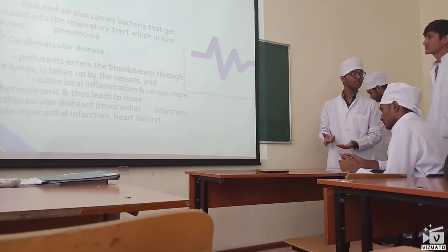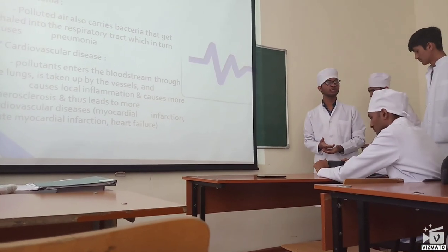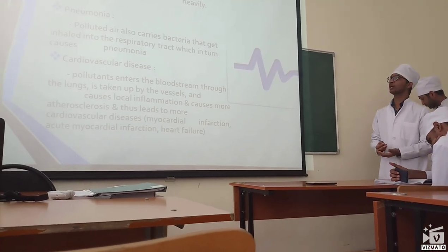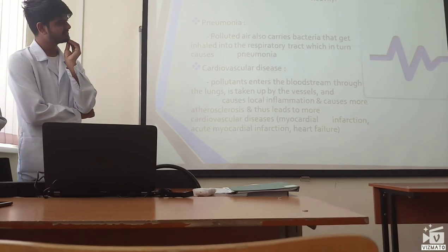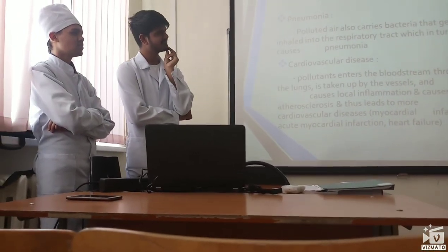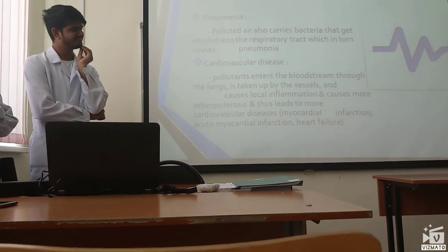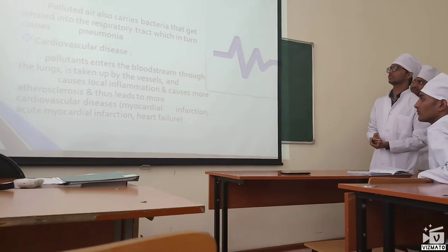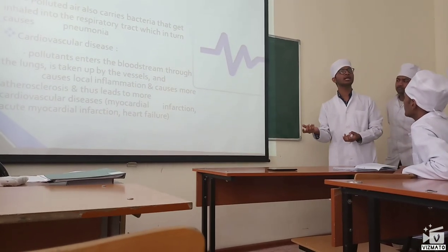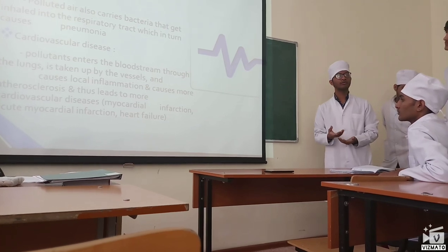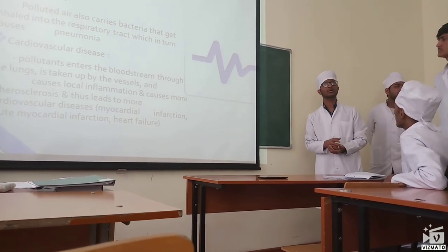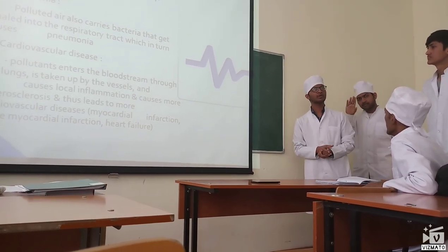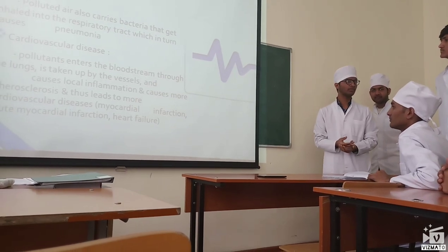In leukemia, WBC count increases to fight the infection caused by the respiratory tract infection. Then pneumonia — in pneumonia, a bacterial infection causes the alveolar sac to fill with fluid, which impairs respiratory functioning. Regarding the cardiovascular system, smoke and many harmful pollutants become stuck in our blood vessels, which dilate or constrict the vessels and cause blood pressure problems.